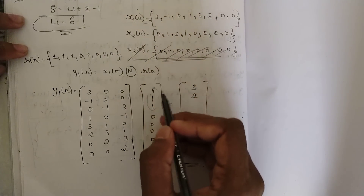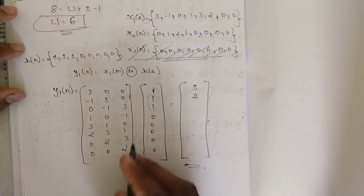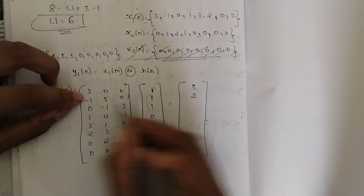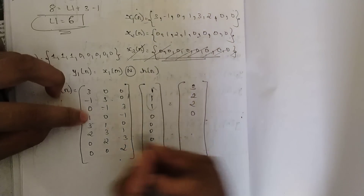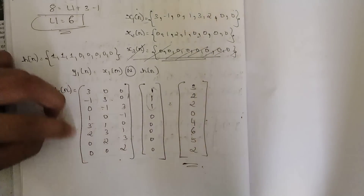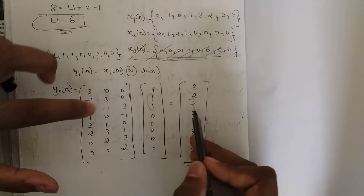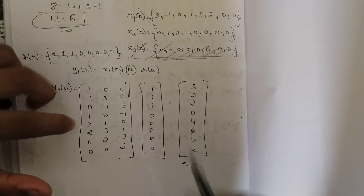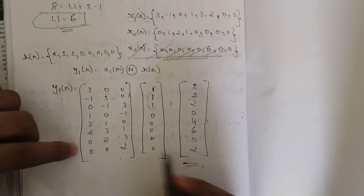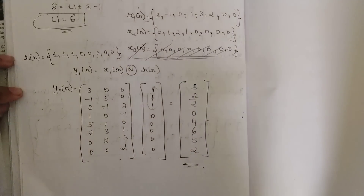Using the unity matrix shortcut, we add the shifted rows: y1(n) = {3, 2, 2, 0, 4, 6, 5, 2}. Verification: position 0 is 3+0+0=3; position 1 is -1+3+0=2; position 2 is 0-1+3=2; position 3 is 1+0-1=0; position 4 is 3+1+0=4; position 5 is 2+3+1=6; position 6 is 0+2+3=5; position 7 is 0+0+2=2.